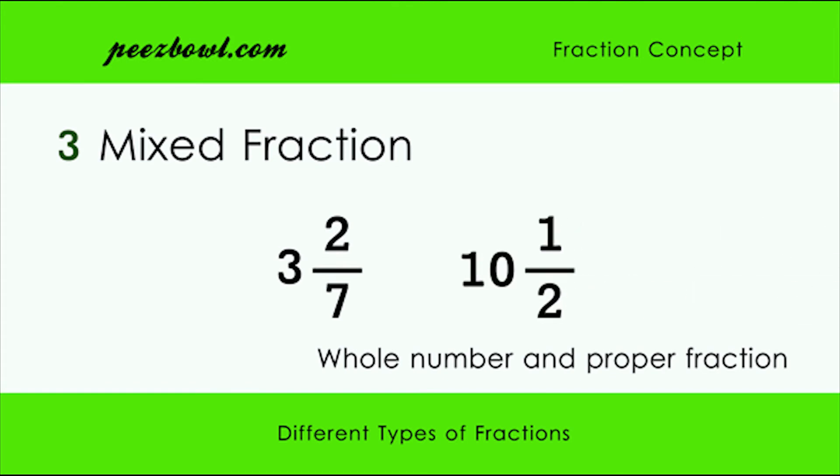In the first example, we have a whole number 3 and a fraction 2 upon 7, and in the second example, we have whole number 10 and fraction 1 upon 2. So, this type of fractions are examples of mixed type of fractions.